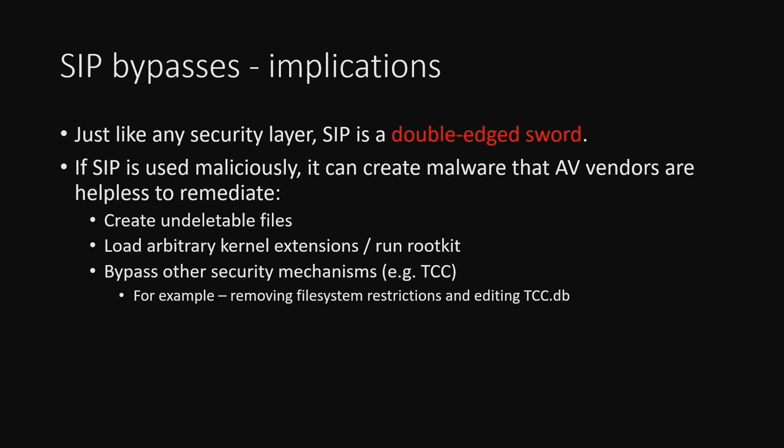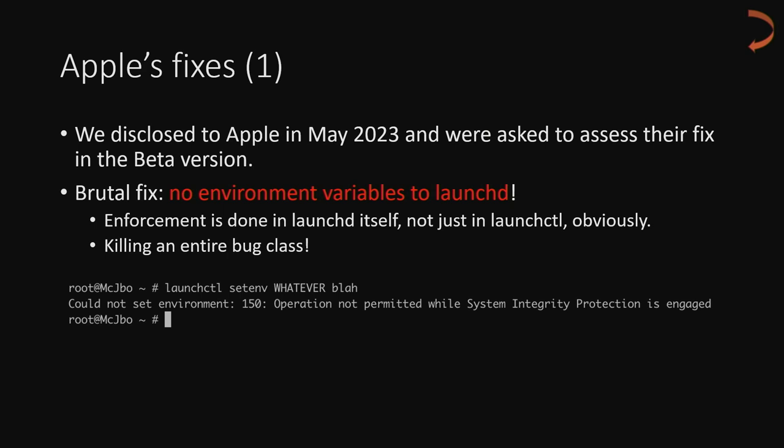So you might be asking, well, who cares? SIP is like most security mitigations — a double-edged sword. It's great for protecting users from themselves and preventing rootkits, but once an attacker gets past that layer they can do things that are extremely difficult to handle if you're an AV or endpoint product. Examples include: creating undeletable malware in folders that even a third-party vendor with every available entitlement can't delete; kernel extension execution, which essentially becomes a rootkit; and bypassing other security layers in macOS like TCC, meaning an attacker could listen on your microphone or watch your camera without any notification.